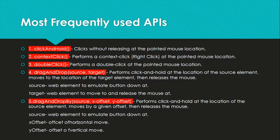Selenium provides many APIs to perform this kind of keyboard and mouse interaction. The first one is the click and hold method — it clicks without releasing at the current mouse position. It clicks and holds without releasing. Then context click, which is used to perform a right click at the mouse pointer location. Then double click, which can also be performed at the mouse pointer location.